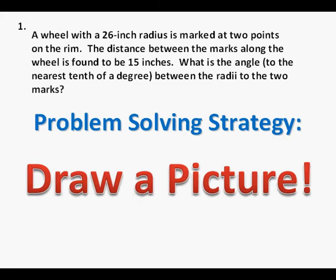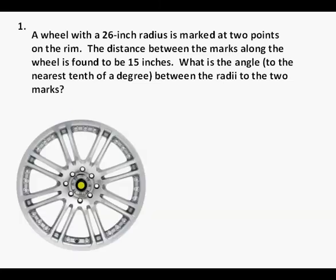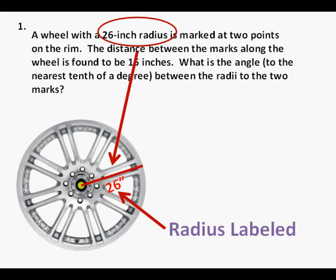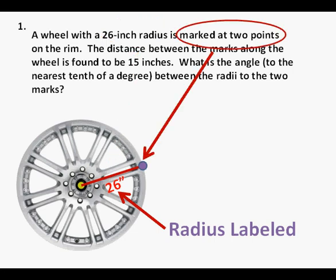So our main problem solving strategy for these problems is to draw a picture. Here's a drawing of a wheel we'll use. From the text we see that our radius is 26 inches, so we label it. Next we mark the wheel at two points, one mark where the radius line segment is and another mark 15 inches away on the edge of the rim. The drawing doesn't have to be perfect, but good enough to see if we're getting a reasonable answer.